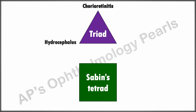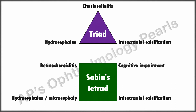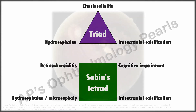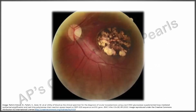The classic features of congenital toxoplasmosis are described as a triad of chorioretinitis, hydrocephalus, and intracranial calcification. Sabin also added cognitive impairment to the classic features; however, less than 10 percent of infected children have all these classical findings together. Retinochoroidal lesions are the most common lesions of congenital toxoplasmosis, with 85 percent being bilateral and predominantly in the macular region.